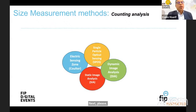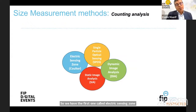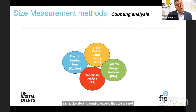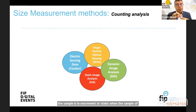The next part of the presentation covers size measurement methods, starting with counting analysis. We have the first method called electric sensing zone — the Coulter system — followed by single particle optical sensing (SPOS), which uses a laser source of light rather than an electric field to measure and count particles. We also have image analysis, which can be dynamic when the sample is in movement or static when the powder sample is held in a sample holder.